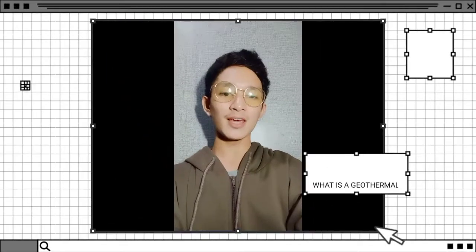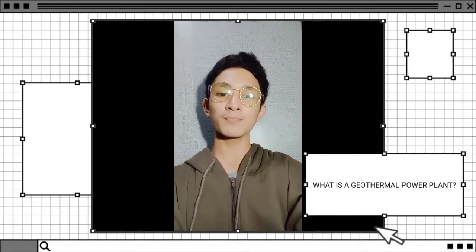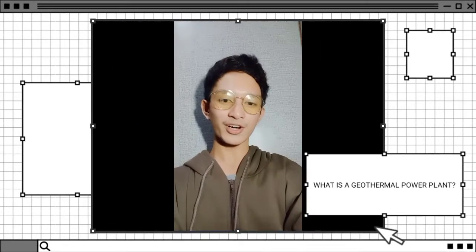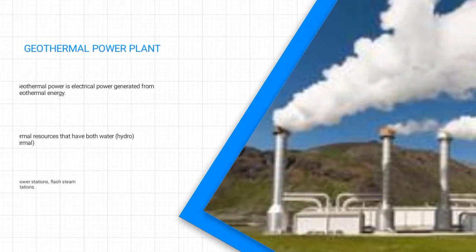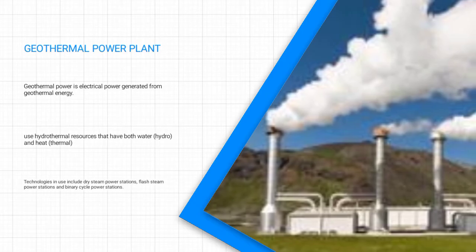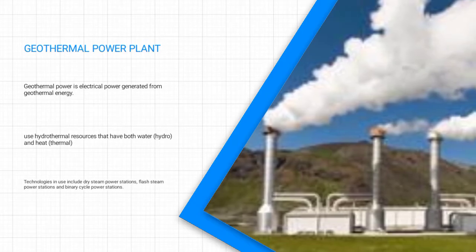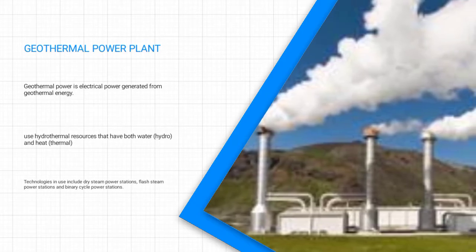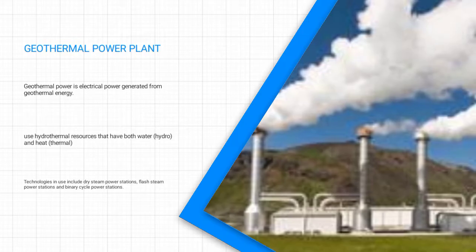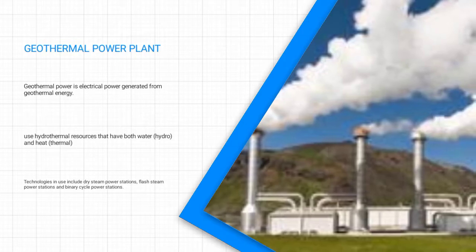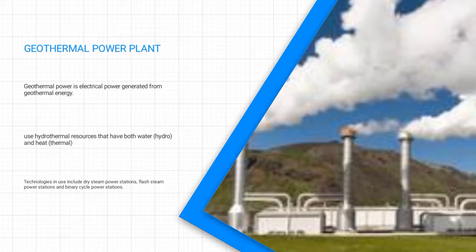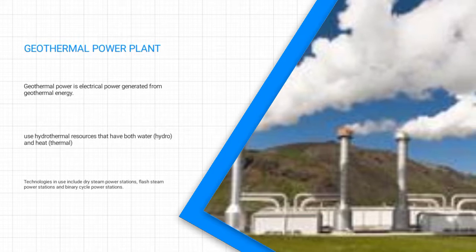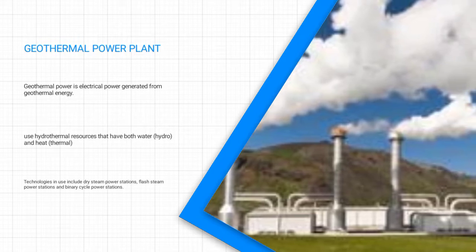So what is a geothermal power plant and how does it work? A geothermal power plant is any electrical power generated from geothermal energy. It uses hydrothermal resources that have both water and heat. Technologies used are dry steam power stations, flash steam power stations, and binary cycle power stations.